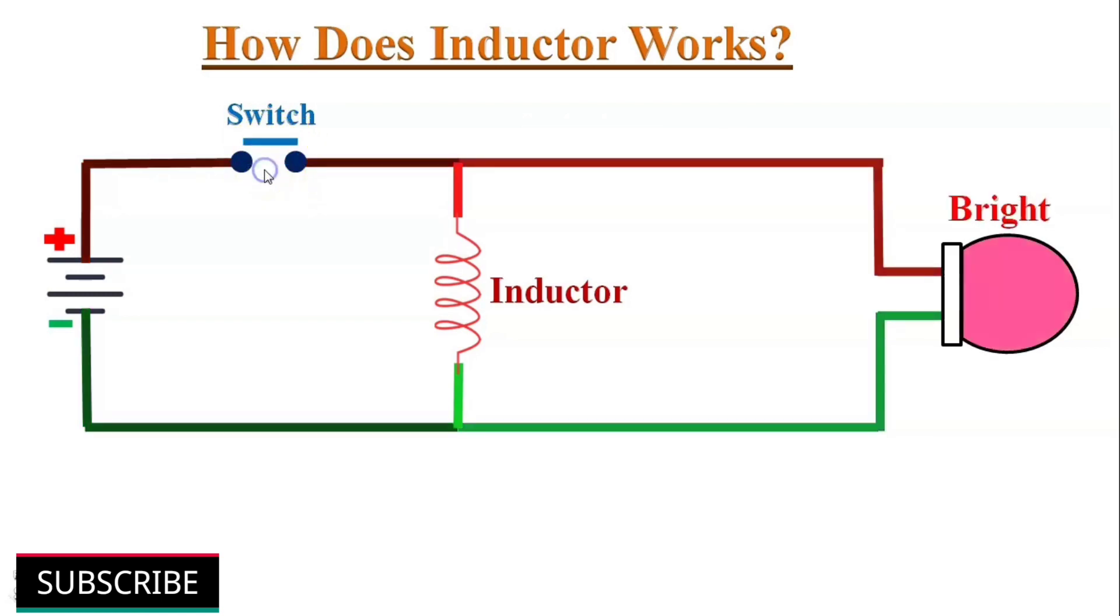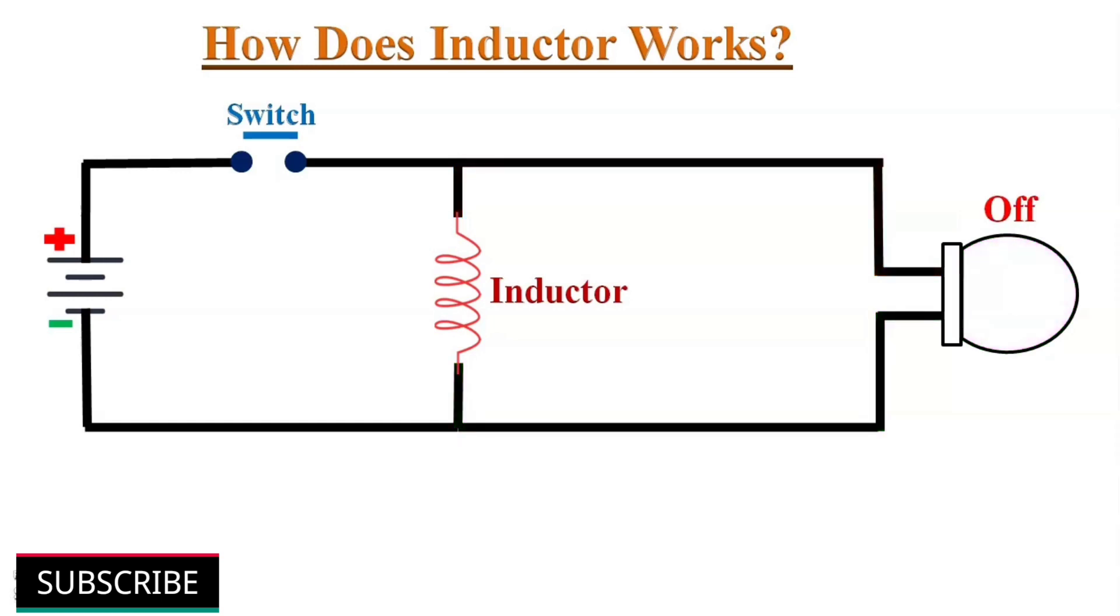When you power off this circuit, first the bulb burns very brightly and then quickly goes out. The reason for this strange behavior is the inductor.